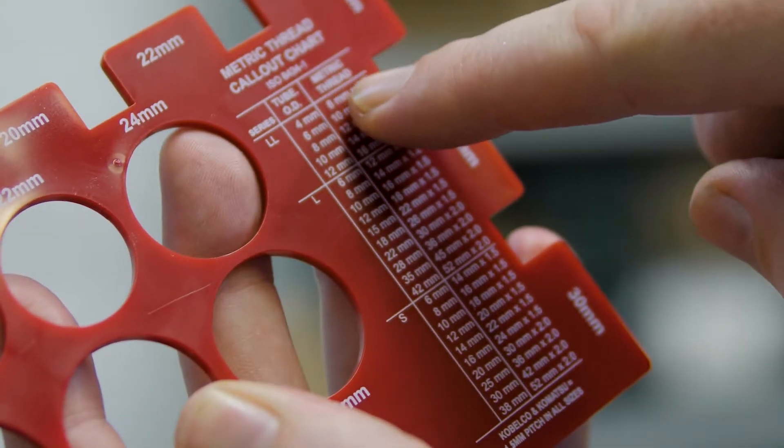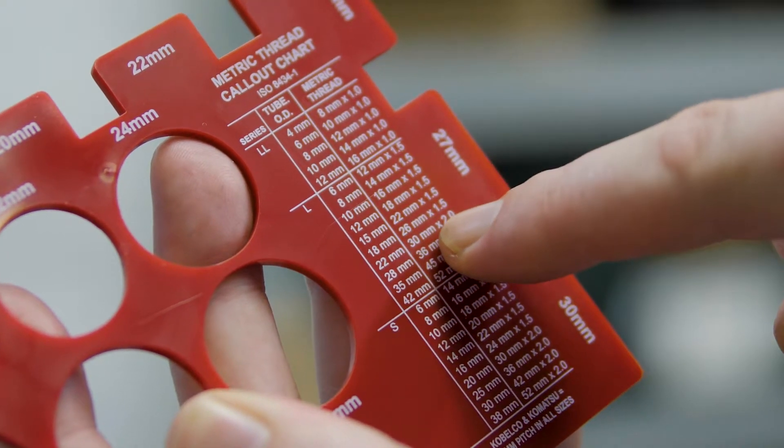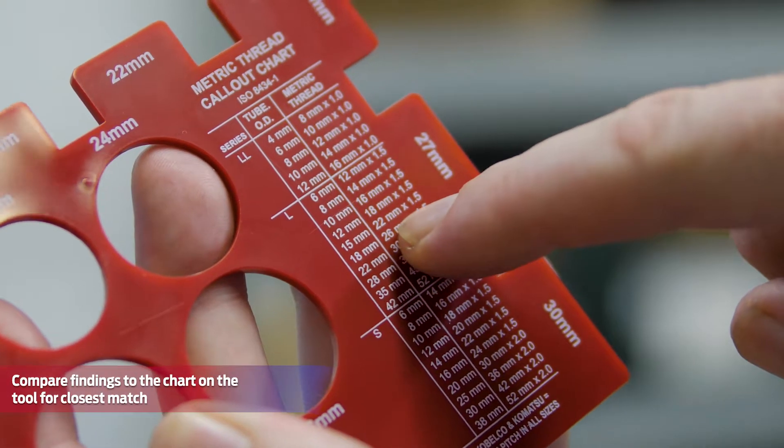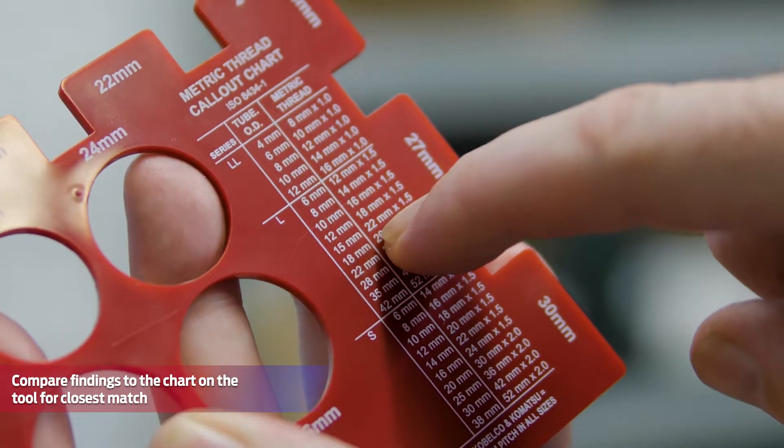Once the thread profile has been identified, as well as thread OD for male or thread ID for female, compare the findings to the chart on each gauge to corroborate your findings.